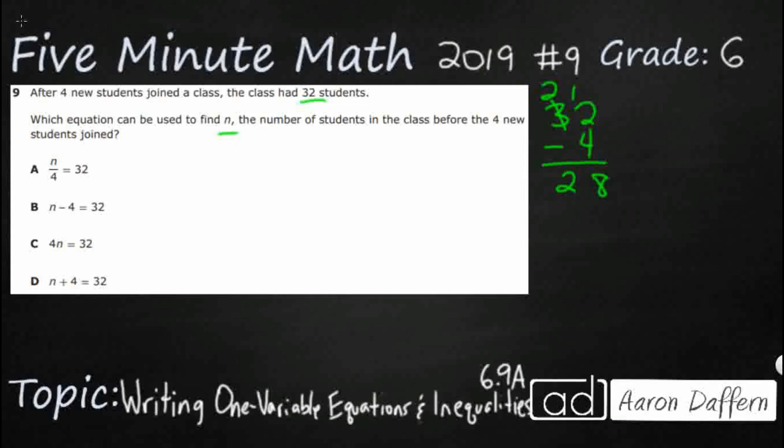So we're trying to solve it. But you know what we can do is we can actually plug this 28 into each of these answer selections and then we can take a look to see if it works. So A would say 28, we're replacing the n with 28 divided by 4, equals 32. Now 28 over 4, 28 divided by 4, that makes 7. So that is not our answer there.